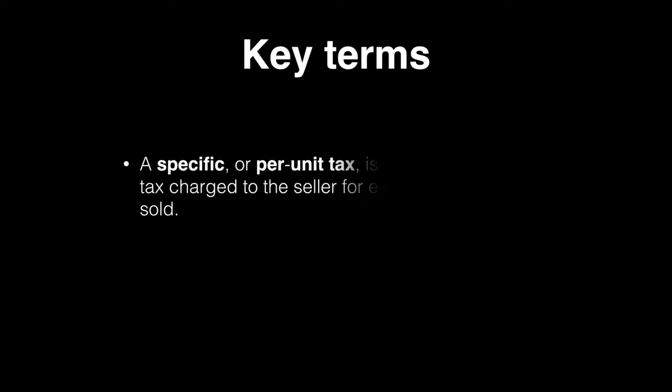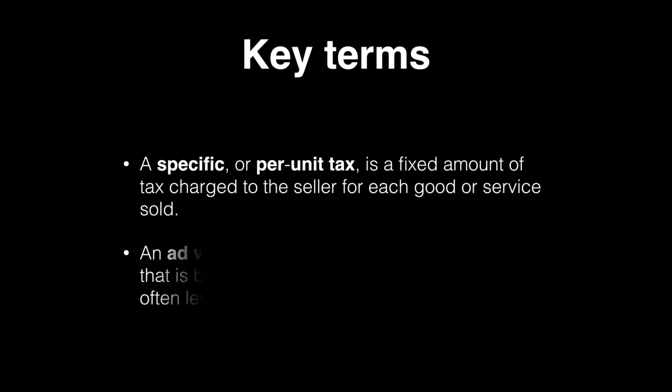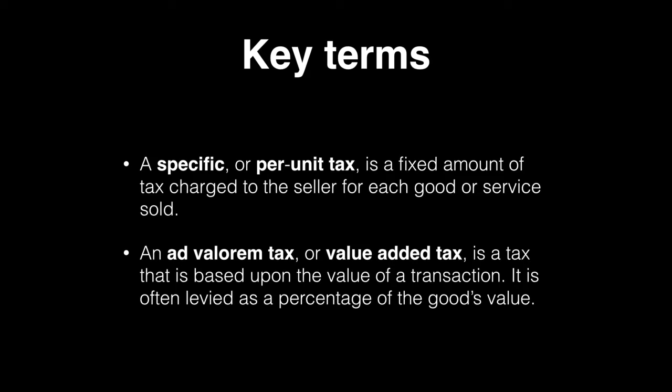There are two types of indirect taxes we are going to analyse in the diagram. The first is a specific or per unit tax, which is a fixed amount of tax charged to the seller for each good or service sold. The second is an ad valorem tax, or value added tax, which is a tax based upon the value of a transaction, often levied as a percentage of the good's value.